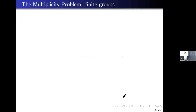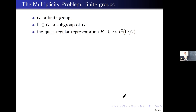Let's start with the multiplicity problem itself, not the limit multiplicity problem. Let's start with the most easy case — finite groups. We assume G is a finite group and gamma is a subgroup of G, so gamma is automatically a finite group. We consider the quasi-regular representation denoted by R, that is the right action of G on L2 functions on the quotient space G modulo gamma. A group element g will send an L2 function phi(x) to its value at xg.